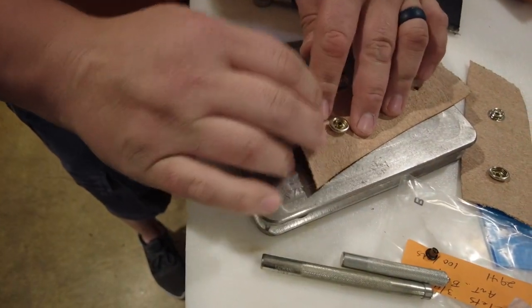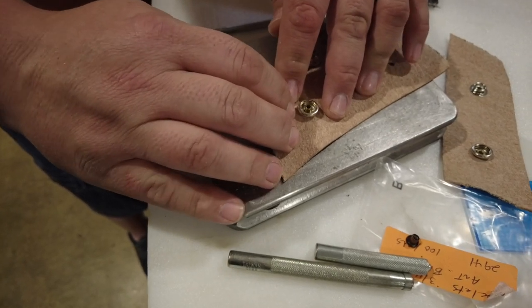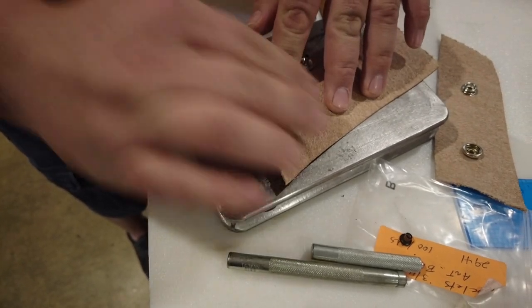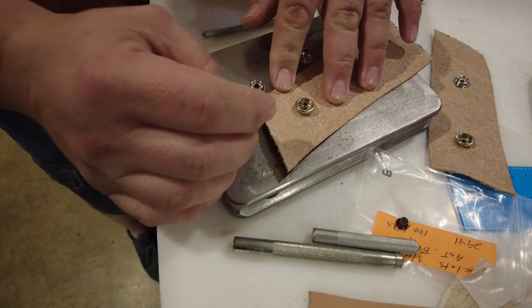One of the problems people have is that it will crush the post and make it go all sideways, and then the snap moves over and it's not centered like it should be.